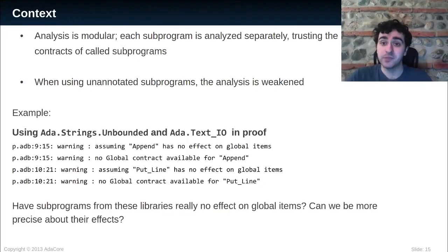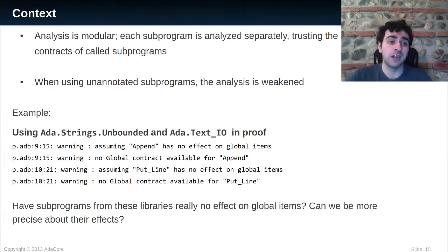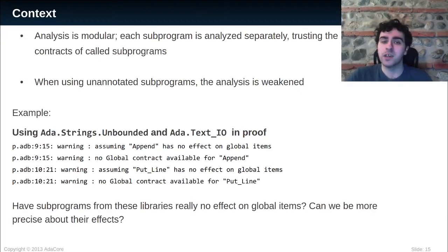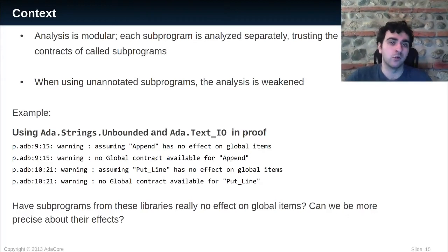In this example, I used subprograms from the standard library Ada.Strings.Bounded, which provides strings with variable lengths, and Ada.Text.IO, the input-output library. When I analyze the subprogram, Spark says that there are no global contracts available and assumes that the subprograms used have no effect on global items. For the use of unbounded strings, the answer is probably yes — the subprograms have actually no effect on global items. But for I/O, this is less certain because I/O procedures have an effect on the file system, for example.